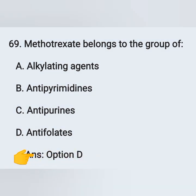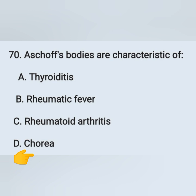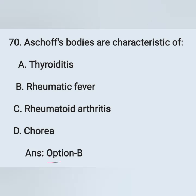Question 70: Aschoff bodies are characteristic of: Option A: Thyroiditis, Option B: Rheumatic fever, Option C: Rheumatoid arthritis, Option D: Chorea. Aschoff bodies are features of rheumatic fever — Option B is the correct answer.